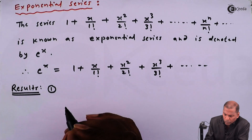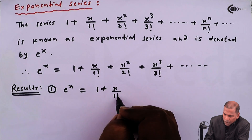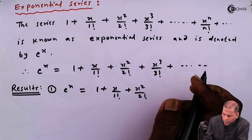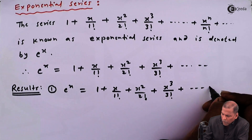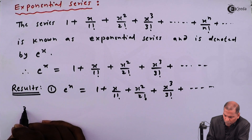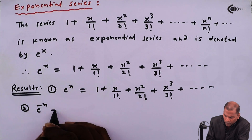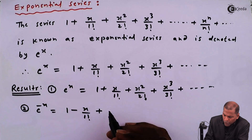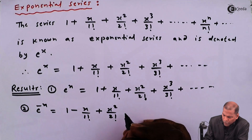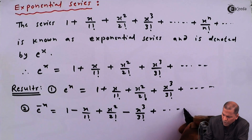Result number 1: e raise x is equal to 1 plus x upon 1 factorial plus x squared upon 2 factorial plus x cubed upon 3 factorial, and going on. By using this formula we can write the formula for e raise minus x: that is equal to 1 minus x upon 1 factorial plus x squared upon 2 factorial minus x cubed upon 3 factorial, and going on.